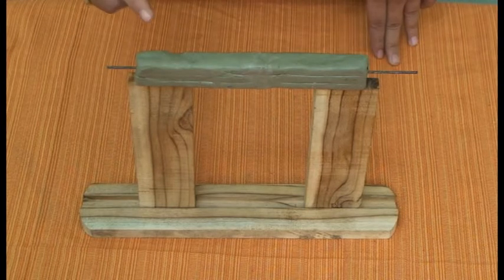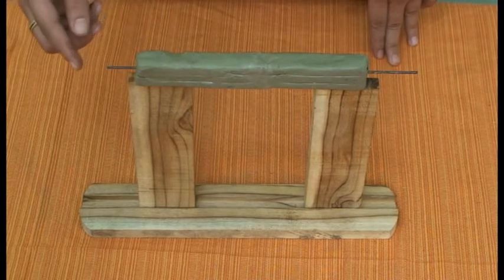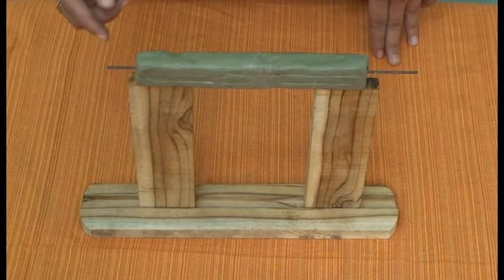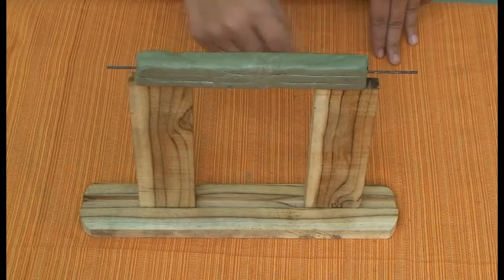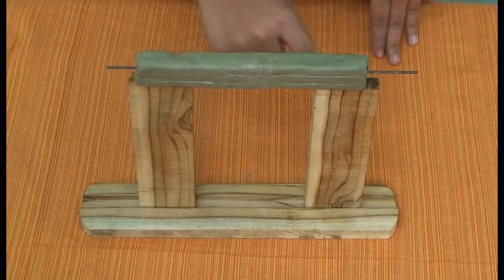After the concrete has set and become self-supporting, the formwork and the falsework can be removed. And now we have a beam between two columns.